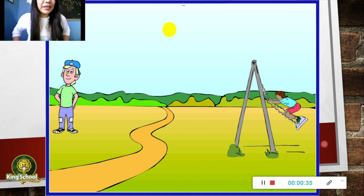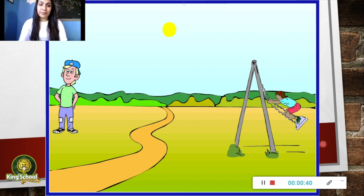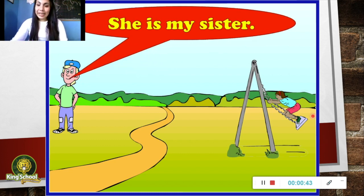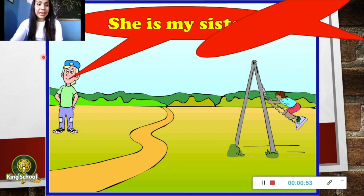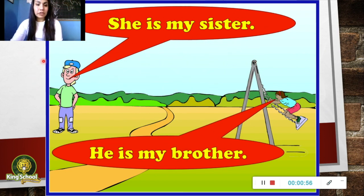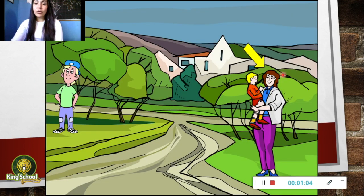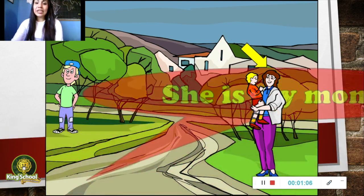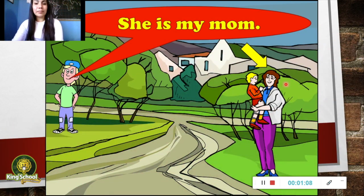Now, pay attention to this picture — we are going to mention some important information. She is my sister. He is my brother. Who is she? She is my mom.